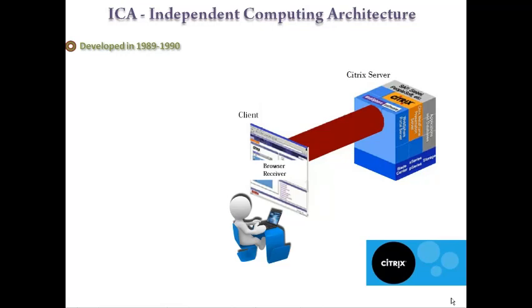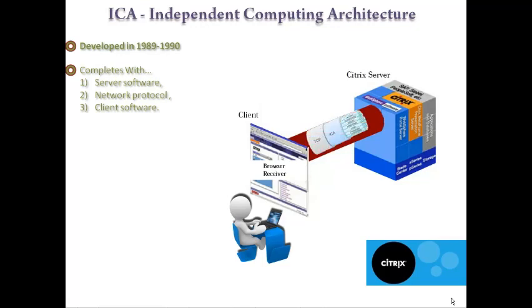Citrix ICA consists of three components. First is server software, second is network protocol, and third is the client software component.